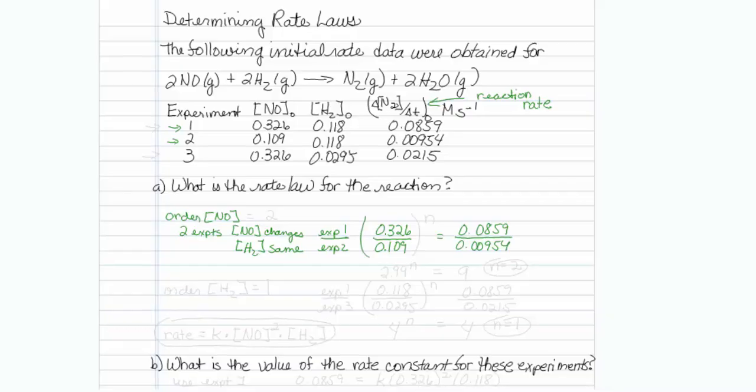And the rate changes to 0.00954. Now, if I can just figure out how the change in NO concentration relates to the change in rate, whether or not N is equal to 1, 2, or 3, I can figure out the order of the experiment.